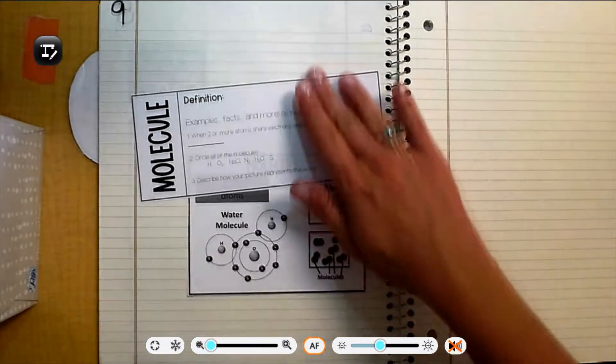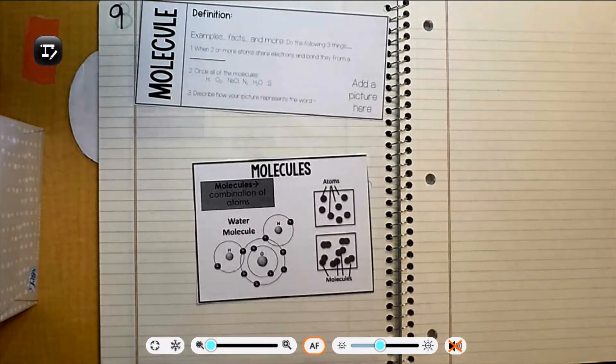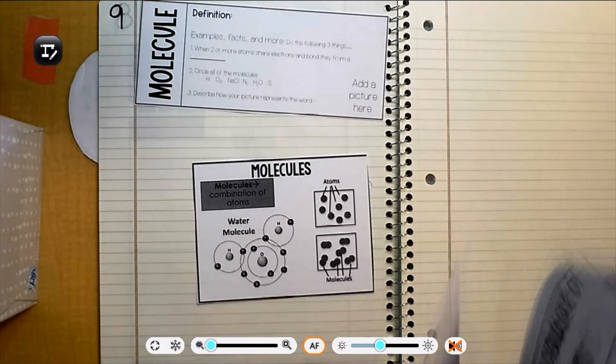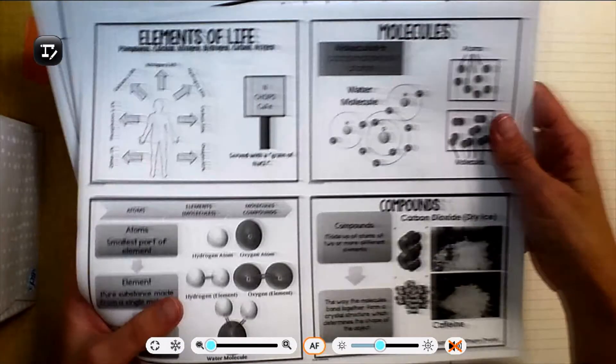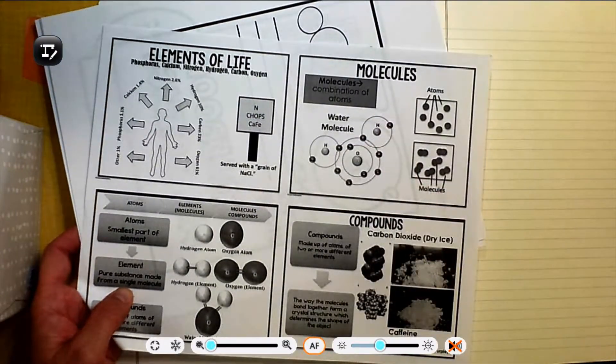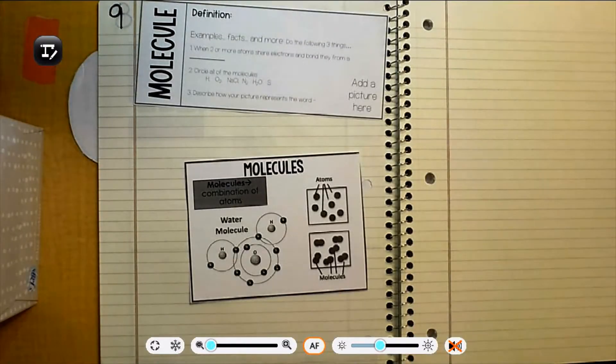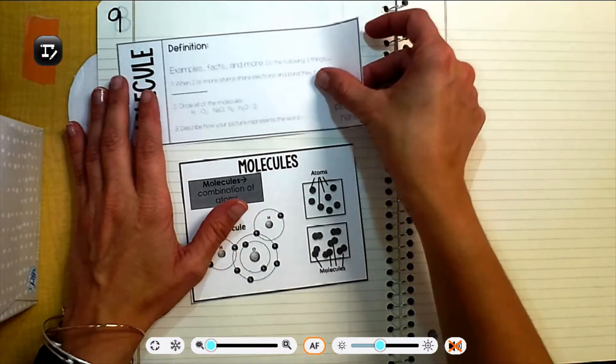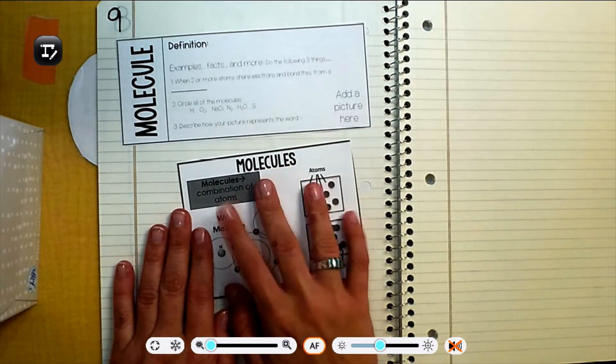And then you're going to need this piece of paper that says molecules at the top. One of those squares. It was originally on this one. Actually, it should still be on this one. It should still be whole. We need this one up here in this corner. So pause the video and go find your definition sheet, your vocab sheet for molecule, and this square for molecules.